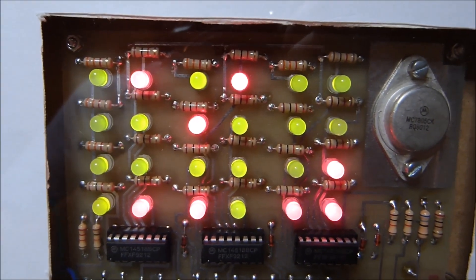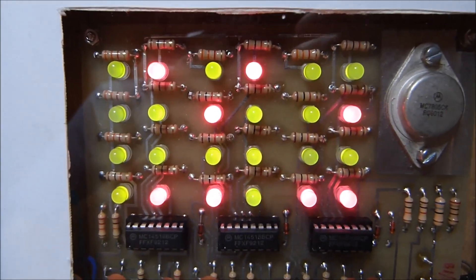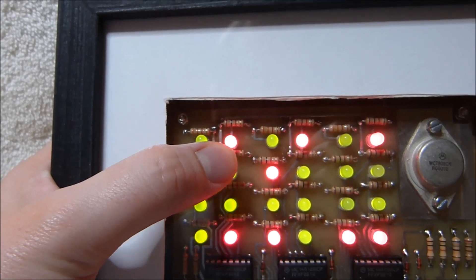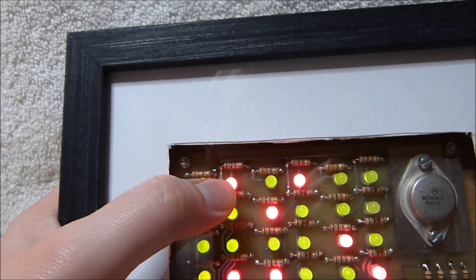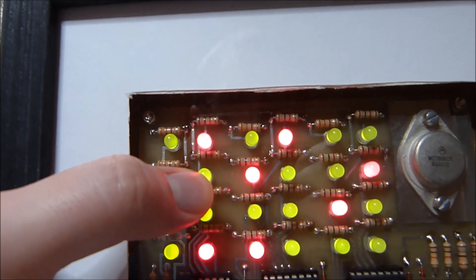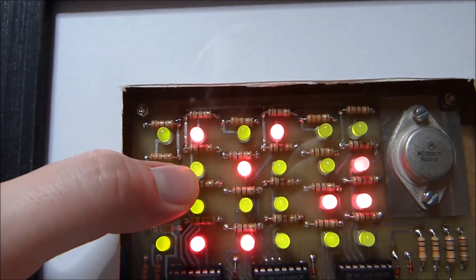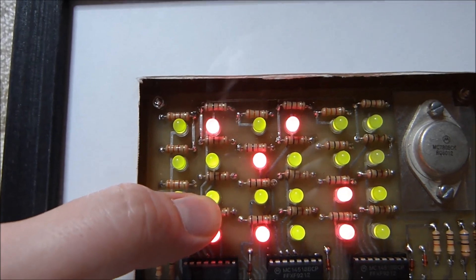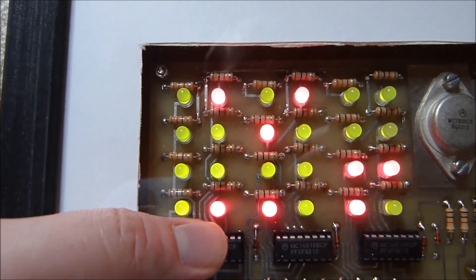I've got it set to the current time now. So the top LED in all these rows here indicates eight. The next LED down indicates four. One after that indicates two. And the bottom one indicates one.